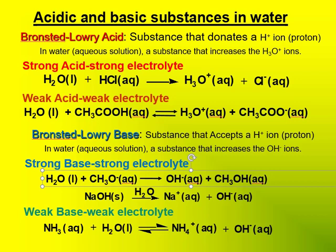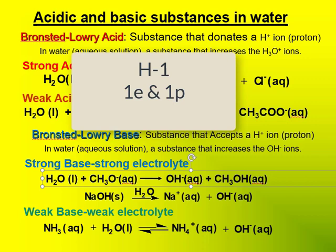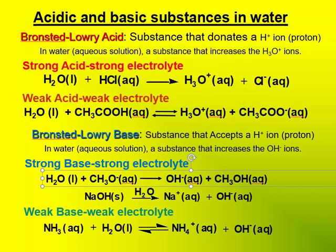A Bronsted-Lowry acid is a substance that donates a hydrogen ion. Quite often, a hydrogen ion is referred to as a proton. That is because the most abundant form of hydrogen is hydrogen-1, an isotope with only one electron and one proton and no neutrons. If the electron is removed from a hydrogen-1 atom, a cation remains — an H+ ion — which is essentially a proton only. A Bronsted-Lowry acid, therefore, in water increases the concentration of H3O+ ions. H3O+ is often called a hydronium ion.